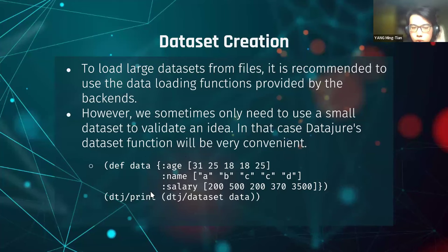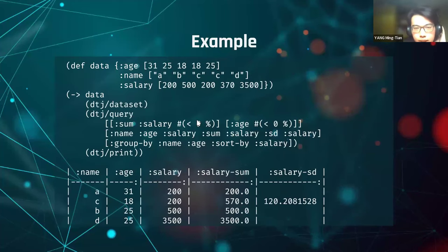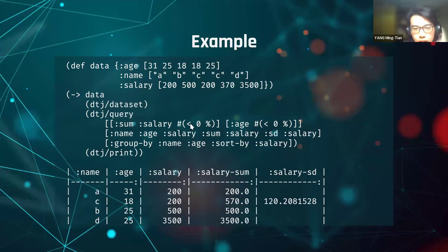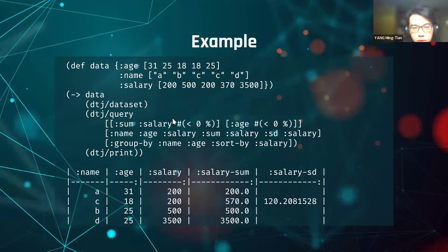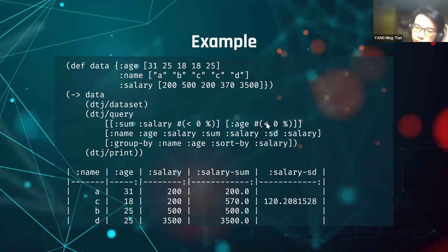Use the print function to print the dataset. Here is a more complete example. We create a dataset, pass it to the query function, and print it out. In the query, we first group the data by name and age and sort by salary. Then we filter rows and choose groups whose sum of salary is greater than zero and whose age is also greater than zero. We select the columns: name, age, salary, sum of salary, and standard deviation of salary.